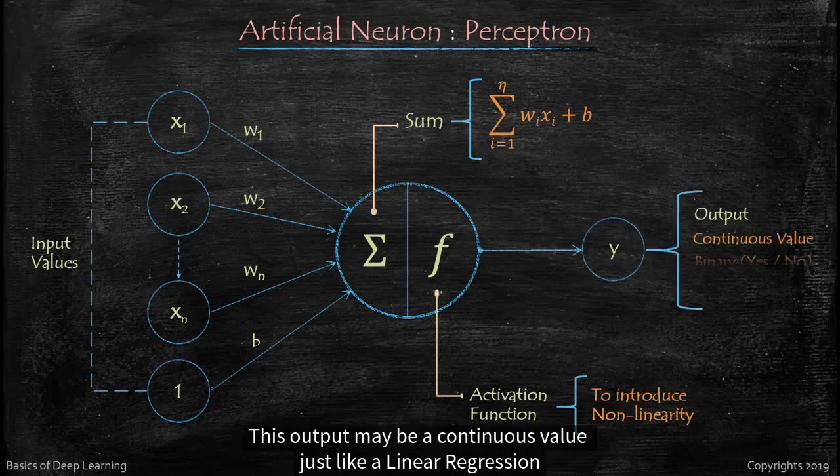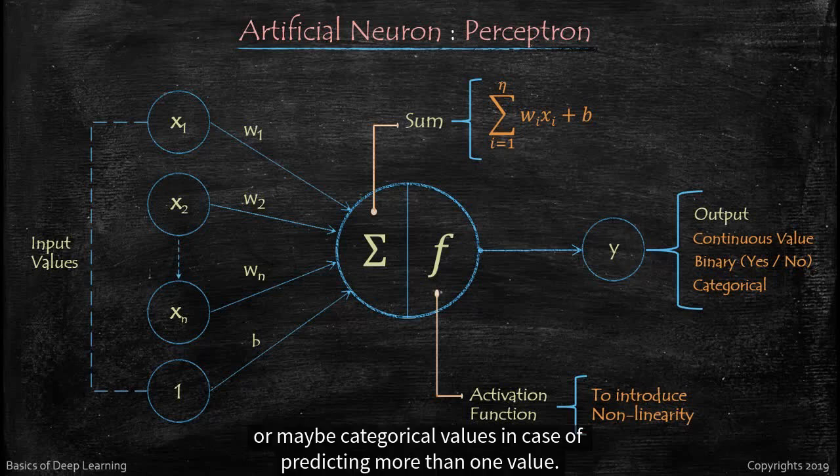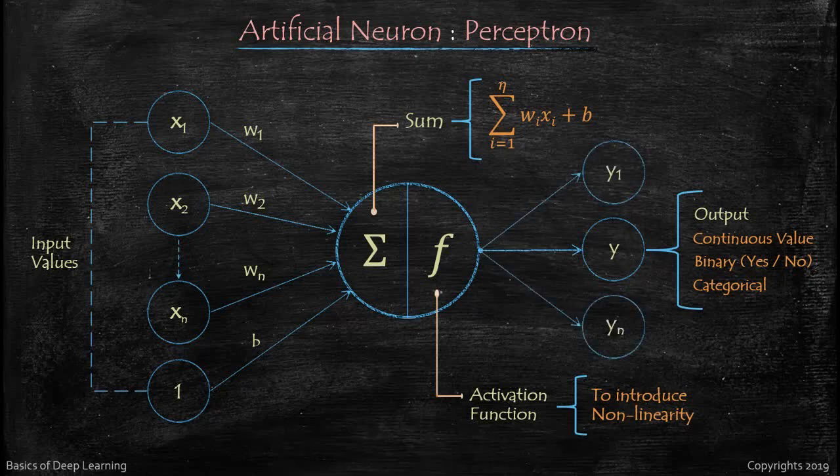This output may be a continuous value just like a linear regression, or a binary value whether it is yes, no, or 0 or 1, or maybe categorized values in case of predicting more than one values. So you can see here outputs are Y1, Y2 all the way to Yn.